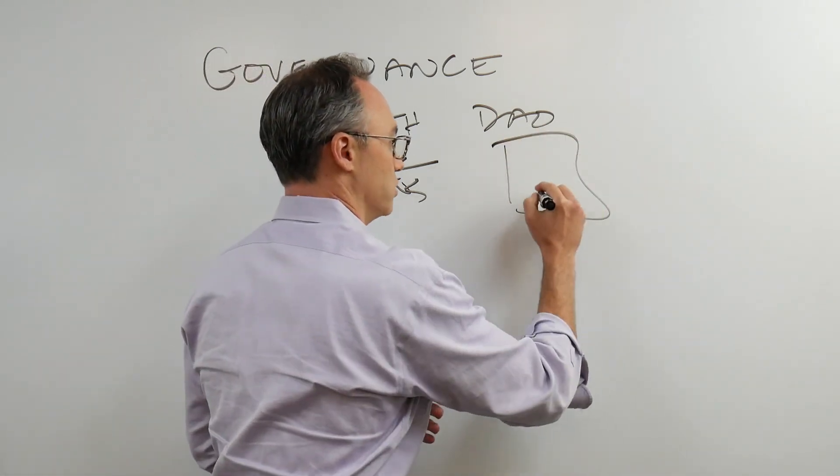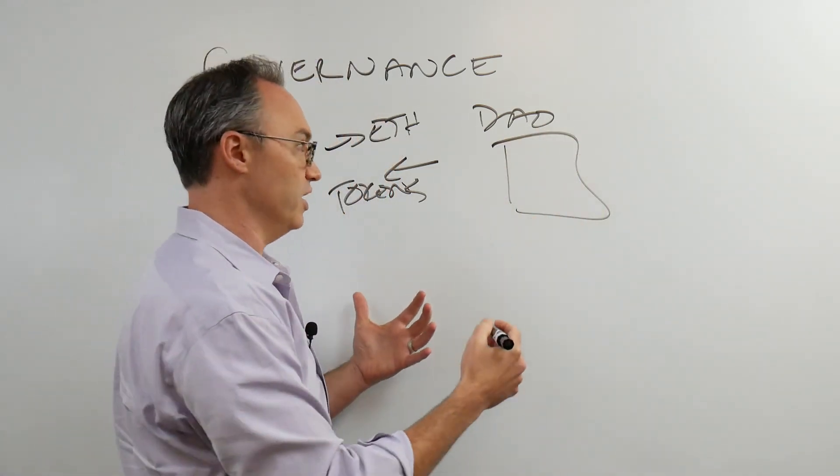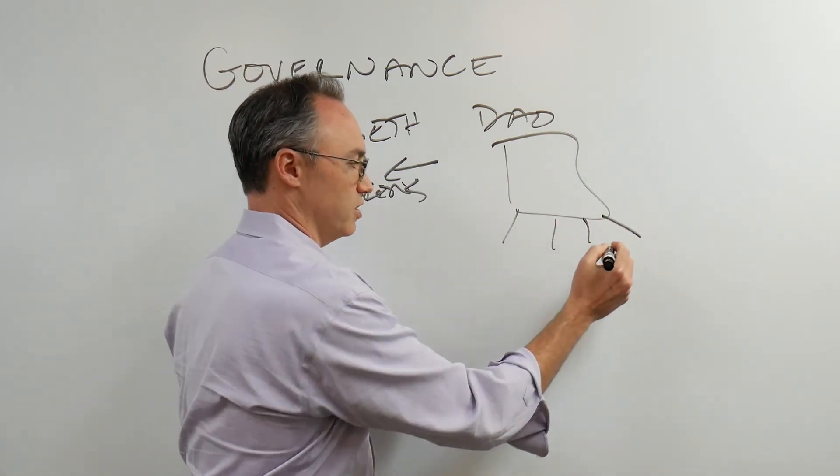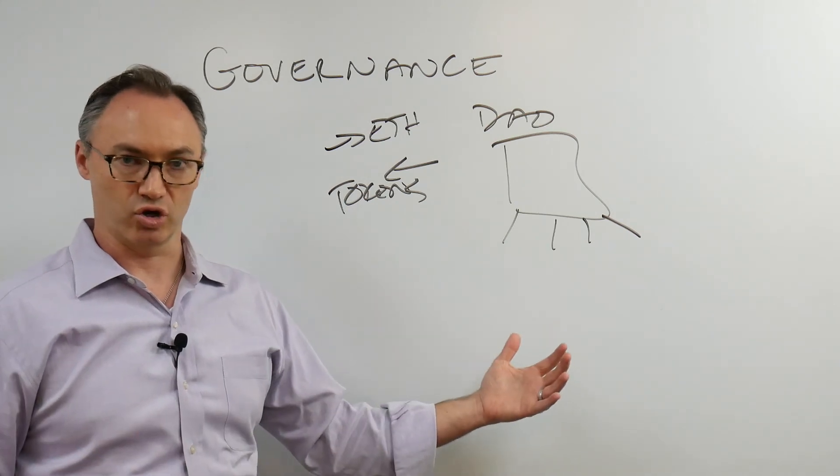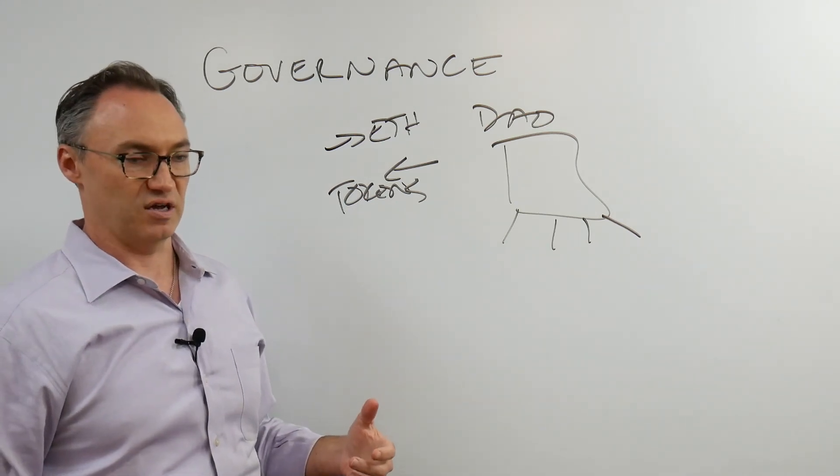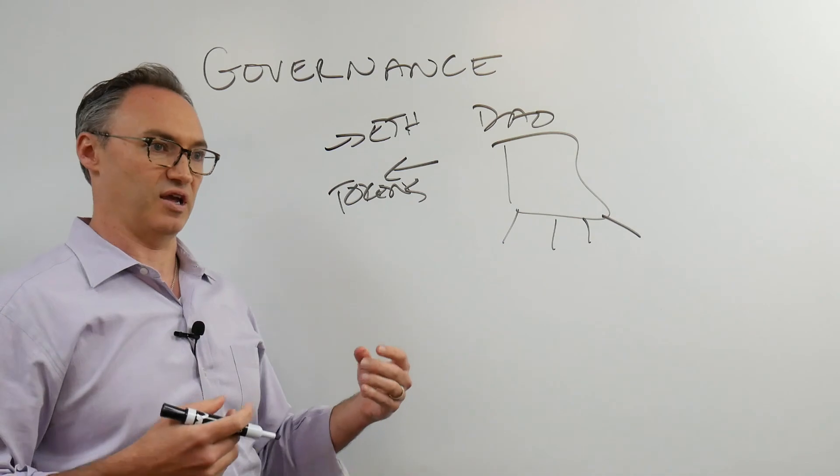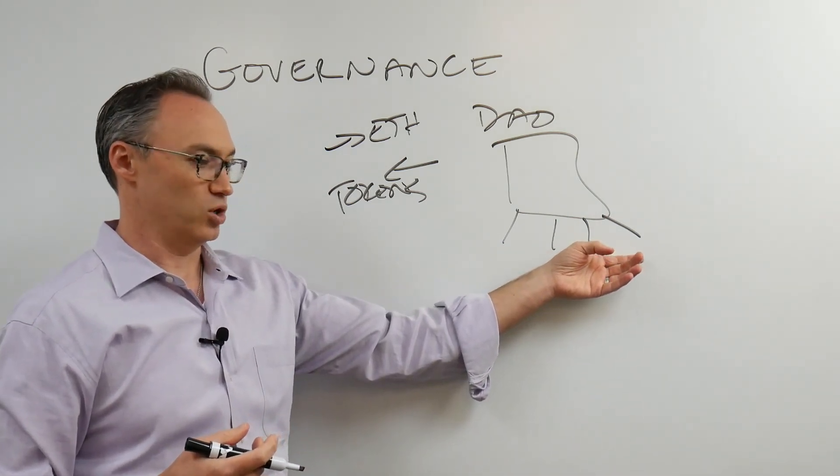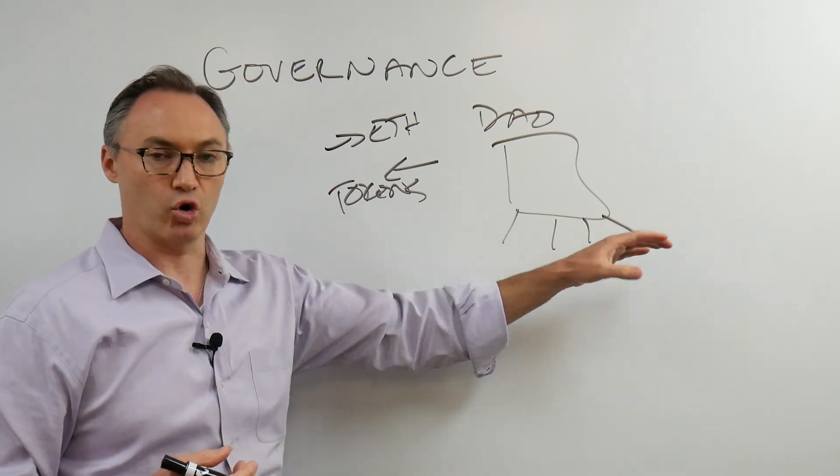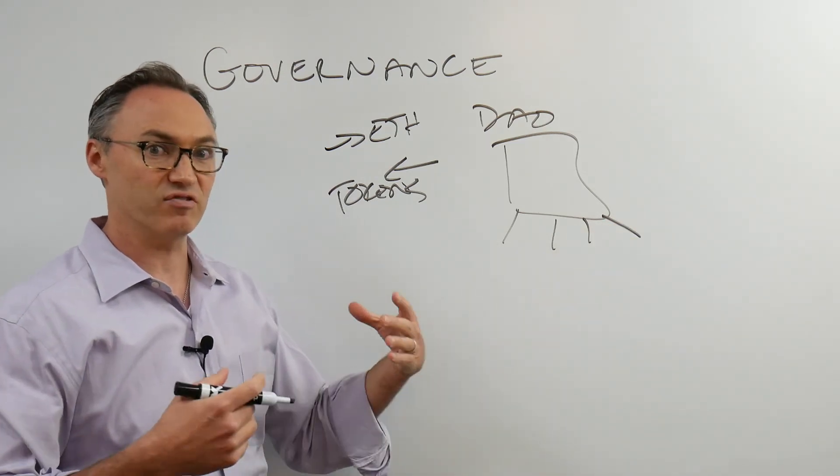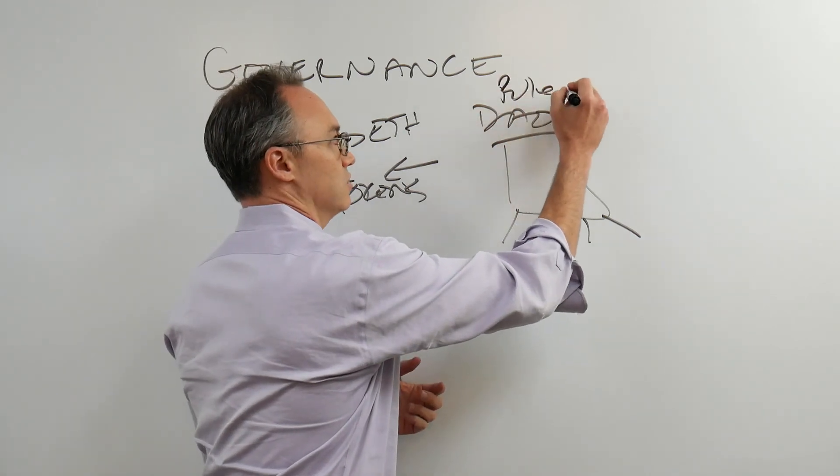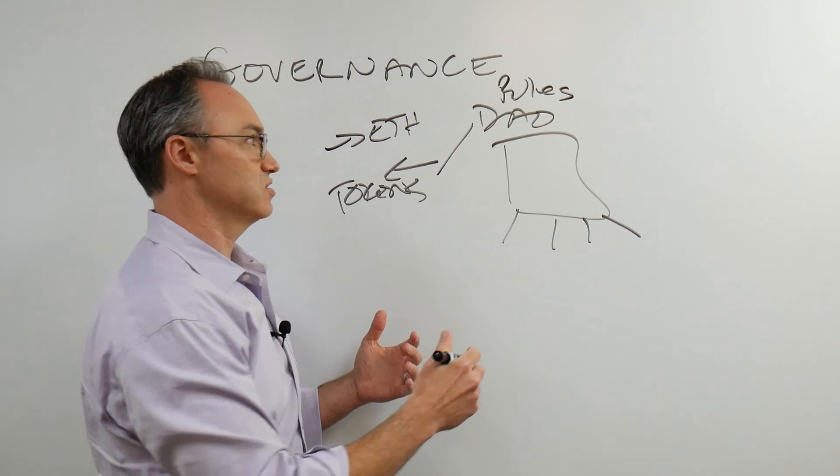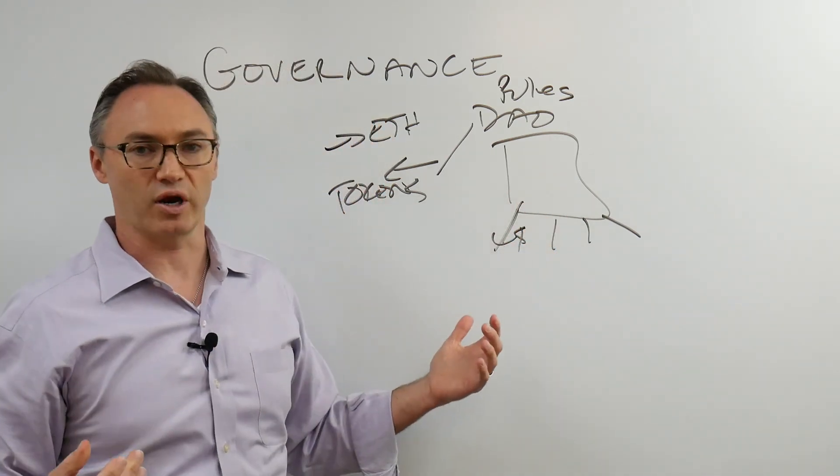The DAO potentially has this pool, this wallet of money, and we can vote on how that money gets distributed. If it's a charity, it might be to certain causes. If it's a non-profit venture capital type thing, we can decide which projects are going to get some of these funds, and then it's very transparent. The rules state when we vote and if the vote is 75 percent, the money gets distributed. That's just what happens. There's no arguing about it. We can all see it.